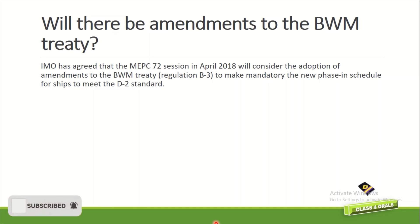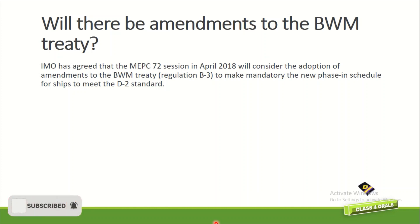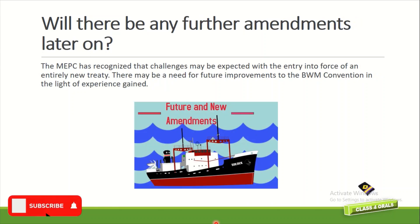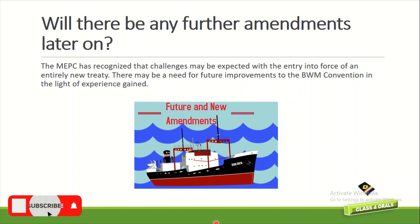Will there be any amendments to the BWM treaty? IMO agreed that the MEPC 72 session in April 2018 would consider adoption of amendments to the BWM treaty on Regulation B3, to make mandatory a new phase-in schedule for ships to meet the D2 standard. The MEPC has also recognised that challenges may be expected with the entry into force of an entirely new treaty, and there may be a need for future improvements to the BWM Convention based on lack of experience gained.